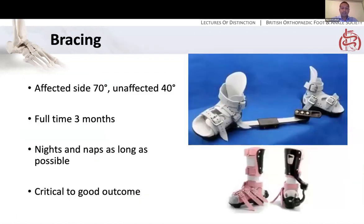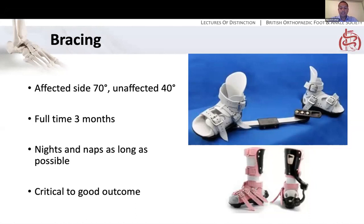After the Achilles tenotomy, bracing is critical to a good outcome. The affected side is placed at 70 degrees of external rotation, the unaffected side at 40 degrees. Full time for three months — 23 hours, you can take it off to clean — then nights and naps for as long as possible, ideally to four or five years. There's a dose response in terms of using the boots and bars and the risk of relapse and recurrence. If boots and bars are not tolerated, you can consider the ADM — abduction dorsiflexion mechanism — a unilateral spring-loaded brace.